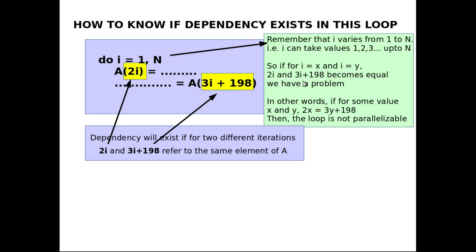In other words, when i is equal to x, 2i becomes equal to 2x. And when i is equal to y, this becomes 3y plus 198. And when this 2x becomes equal to 3y plus 198, if this is equal, then the loop will not be parallelizable.